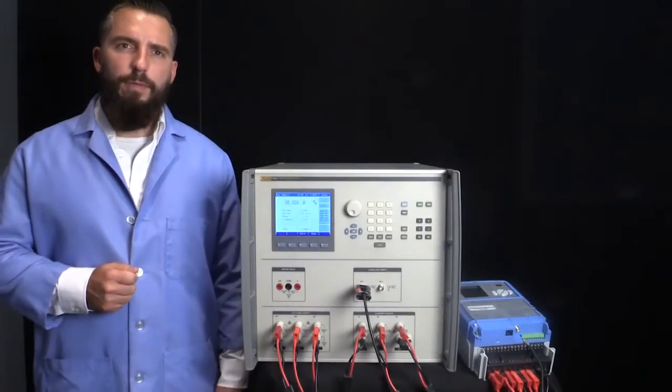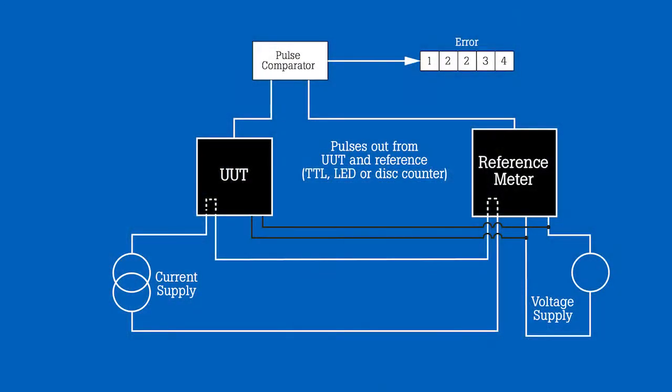Calibrations are traditionally performed using a reference measurement technique where a known amount of energy is simultaneously supplied to a reference meter and the meter under test. A reading from the reference meter is then compared to a reading from the UUT and the error is calculated.